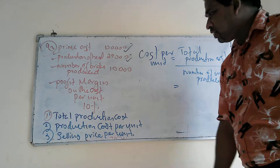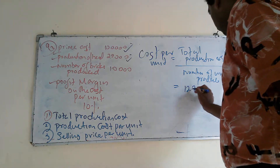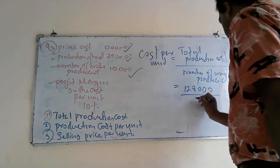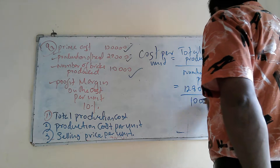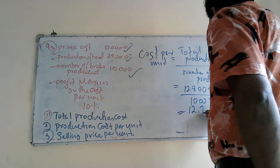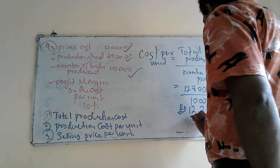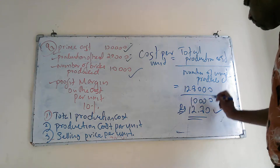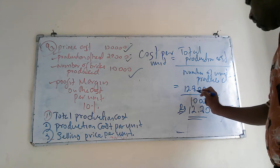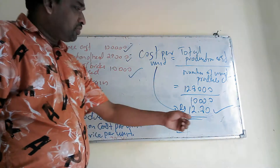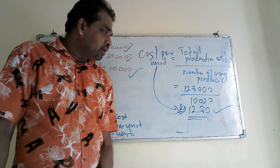Here, total cost of production is 120,000 and number of units produced is 10,000. So you divide 120,000 by 10,000 units, which gives 12.8 rupees per unit. The unit cost is 12 rupees and 80 cents.